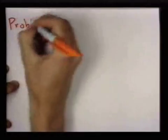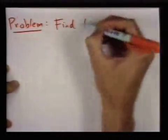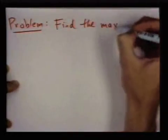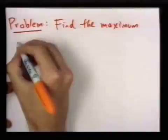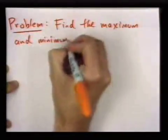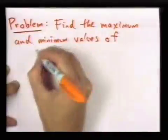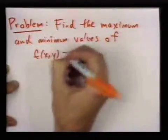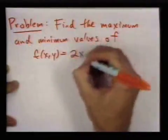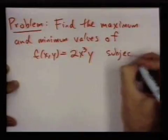So here's a specific problem: find the maximum and minimum values of the function f(x,y) = 2x³y subject to the constraint x² + y² ≤ 4.